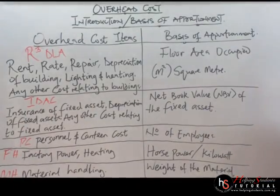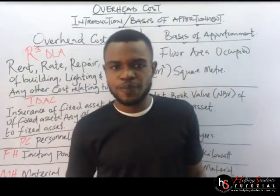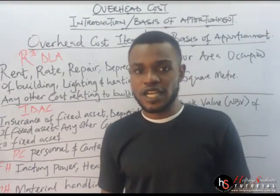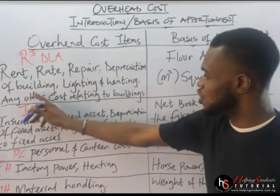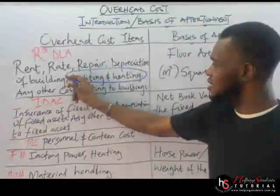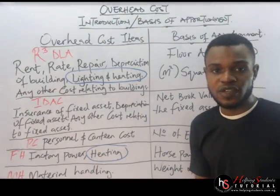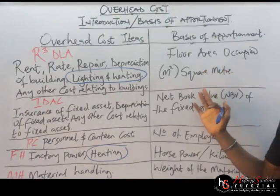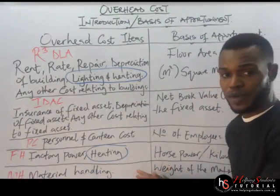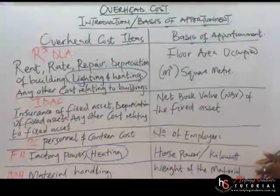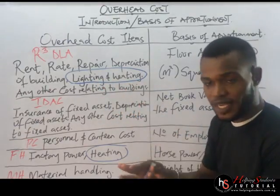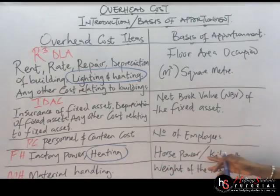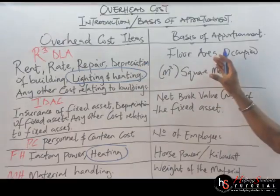You must know this basis of apportionment — it is very, very important. If you don't know it, you can't answer any question under the primary method. Now, take note: in the first group we have Lighting and Heating together; but in the FH group, Heating is separated. Whenever Lighting and Heating are together, you use floor area occupied or square metres. But if they are separated — as in the FH group — you apportion Heating using Horsepower or Kilowatts, while Lighting will always use floor area occupied.